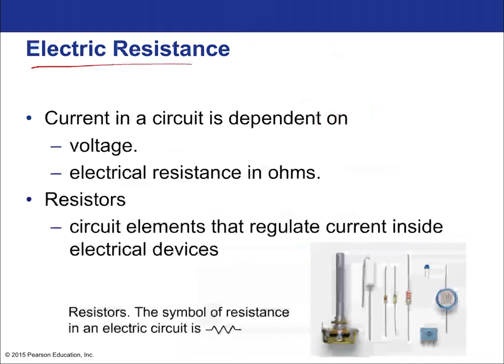Current in a circuit depends on the voltage and the electrical resistance in ohms. All circuits have resistance because all wires have resistance, unless they're perfect superconductors. The resistor is the circuit element that regulates the current inside an electrical device, because sometimes you want there to be some lost energy, as that allows for particular types of circuits to be built. This is what resistors look like when building circuits — their symbol looks like a lightning bolt with two ends sticking out.